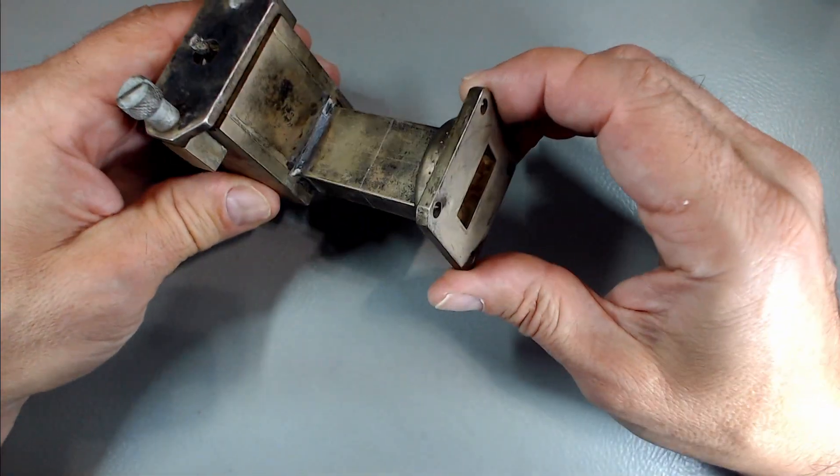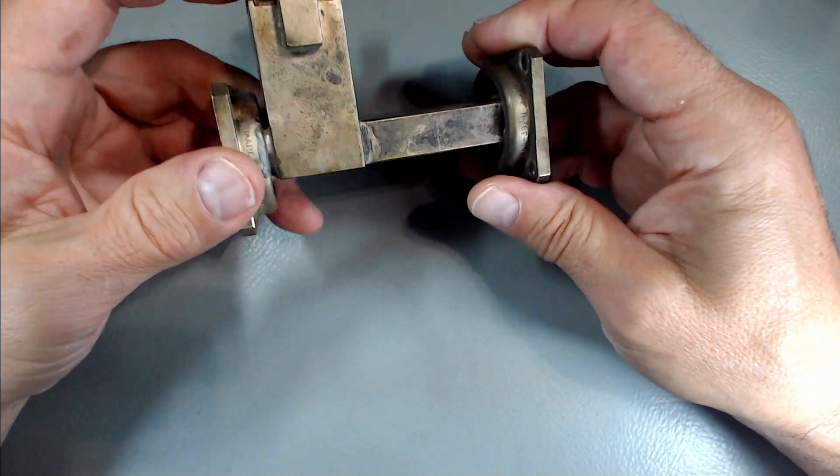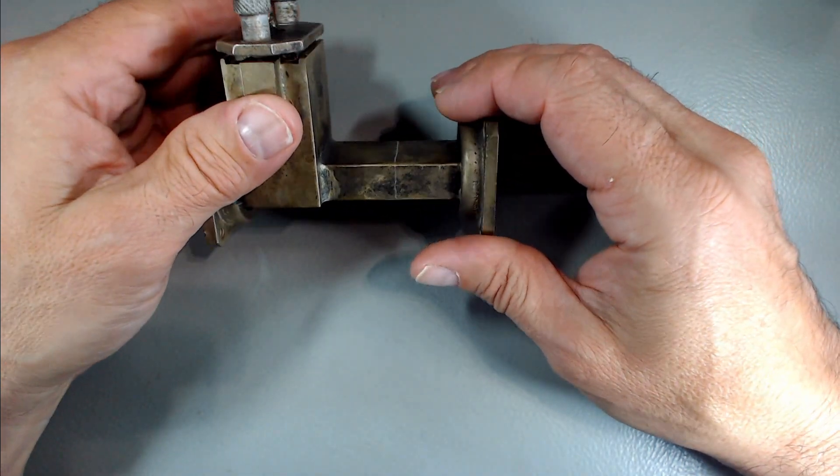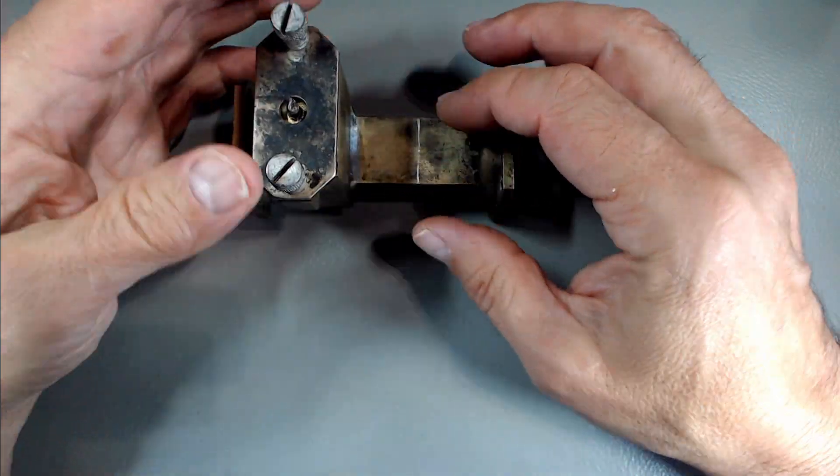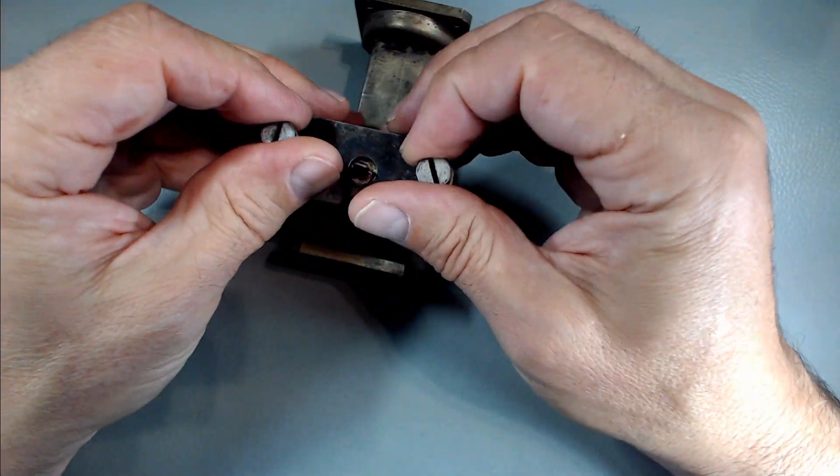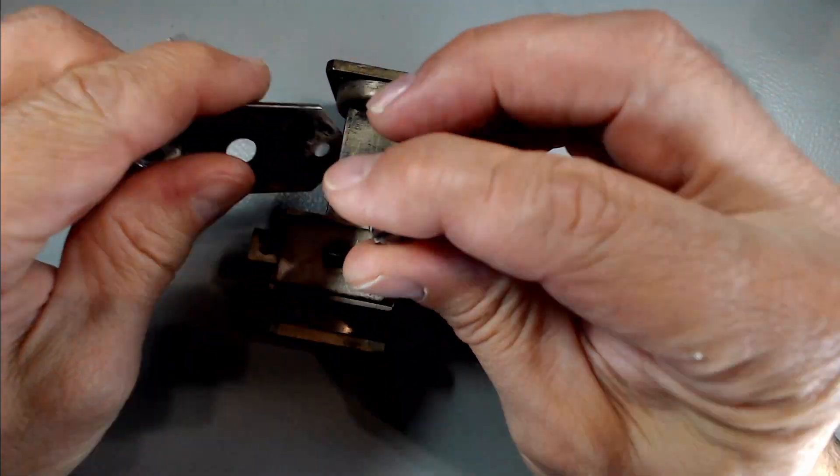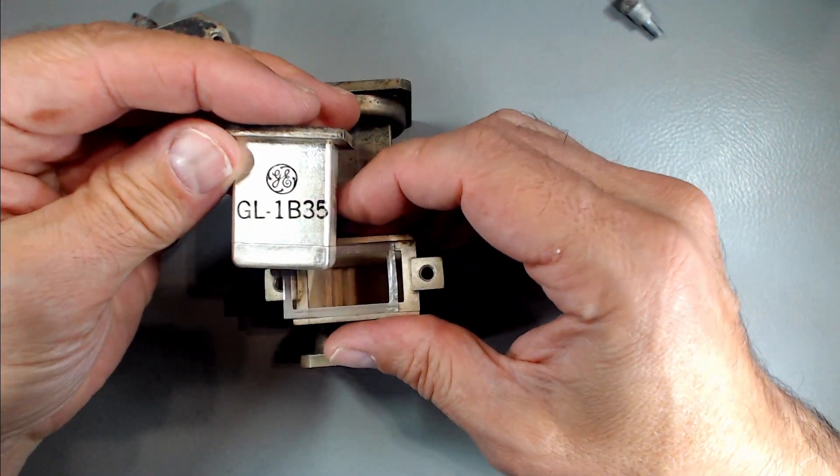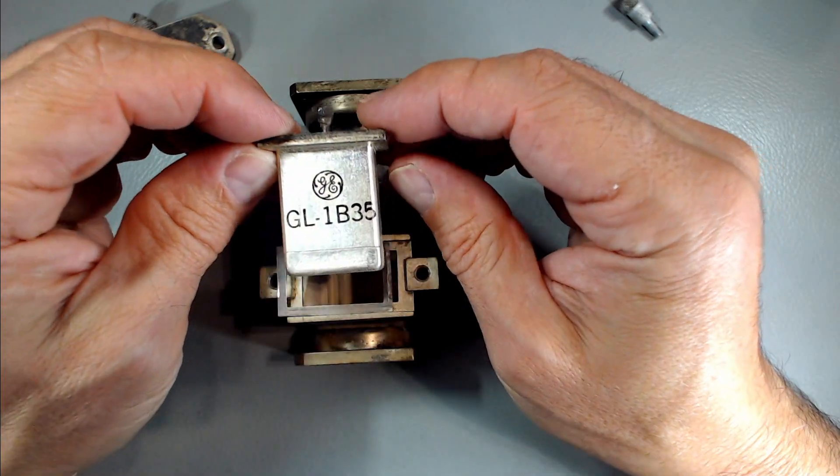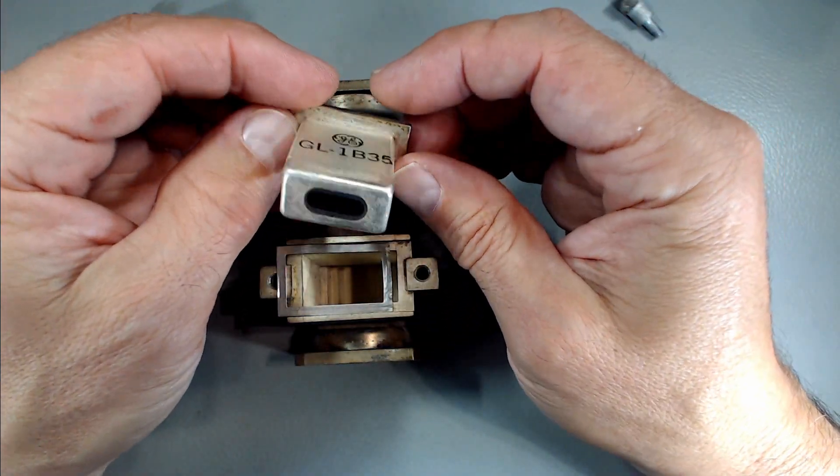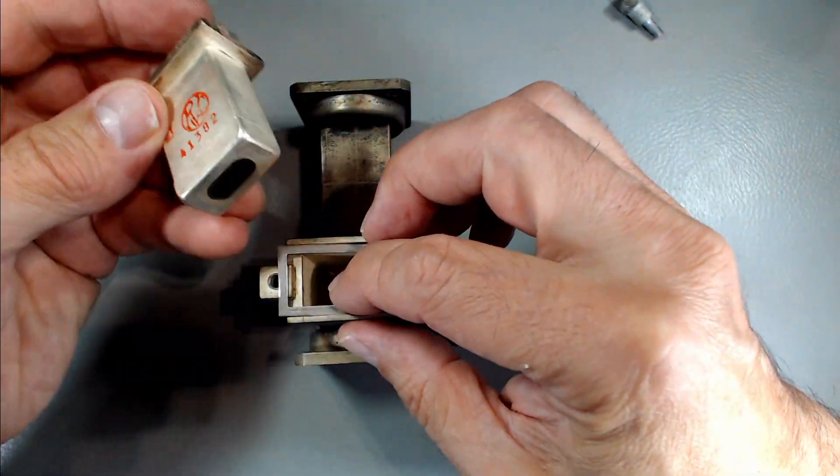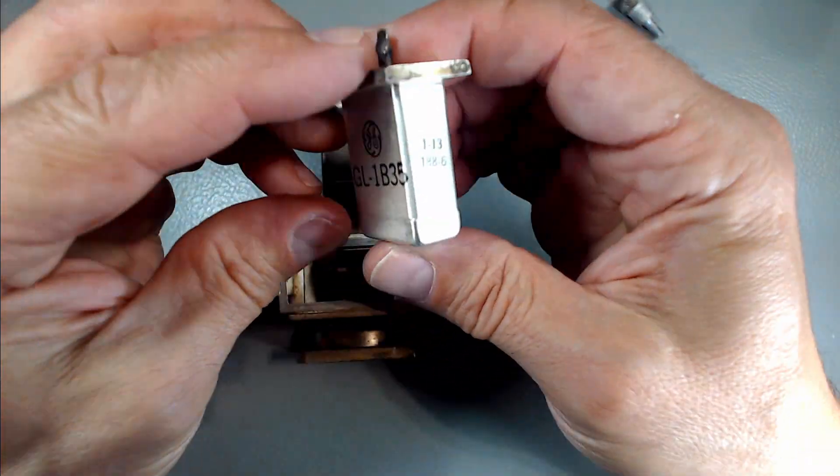The reason I'm saying this is, well, this is actually a microwave switch for pulsing applications and it contains a transmitting tube. It's a GL1B35 which is a pulsing unit from General Electric.